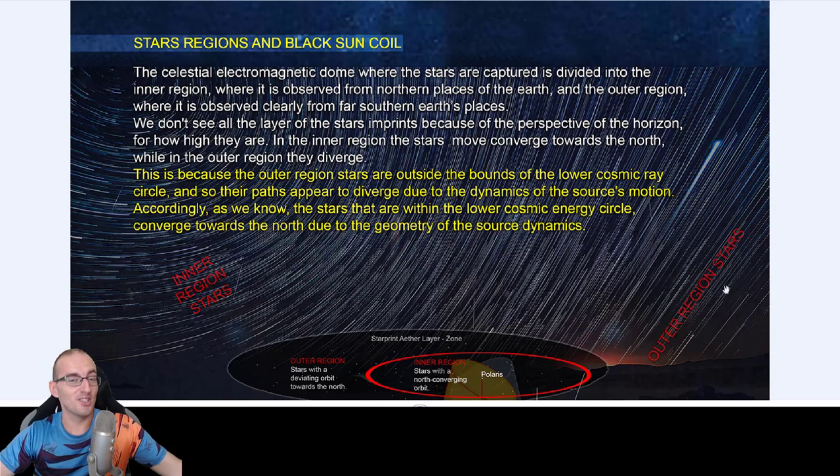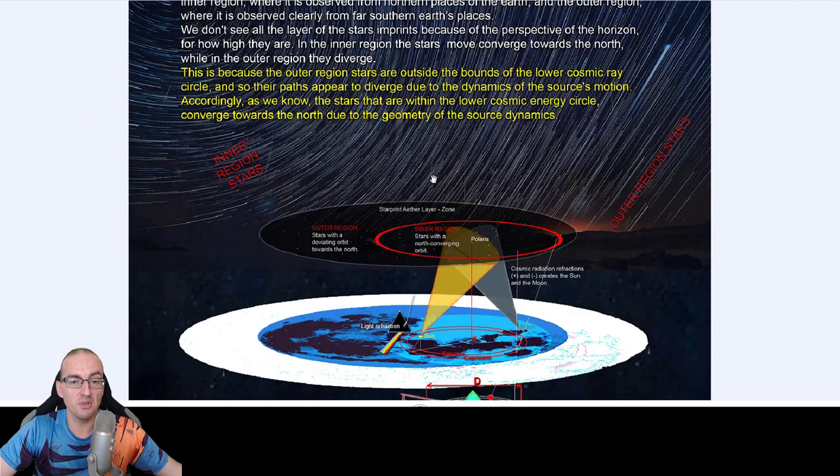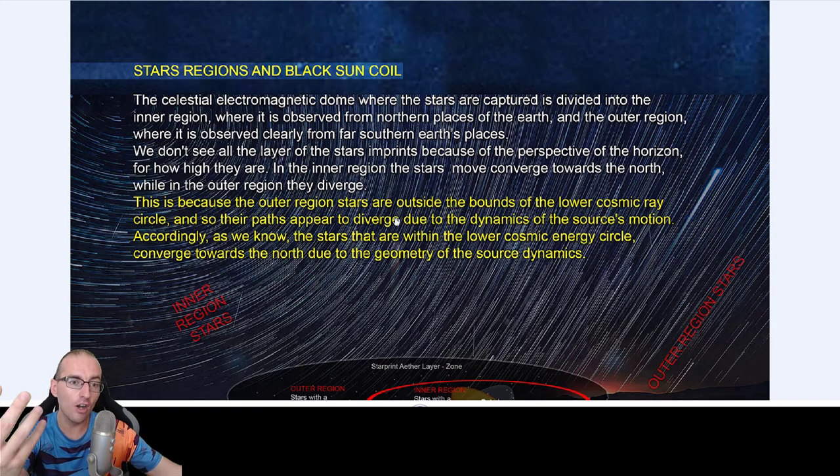The stars, the movement of the stars, stars of the north and the south, even though the north and the south doesn't exist. Black sun coil, vibes of cosmos, everything is so simple once you understand. So let's read clearly: stars, regions, and black sun coil.